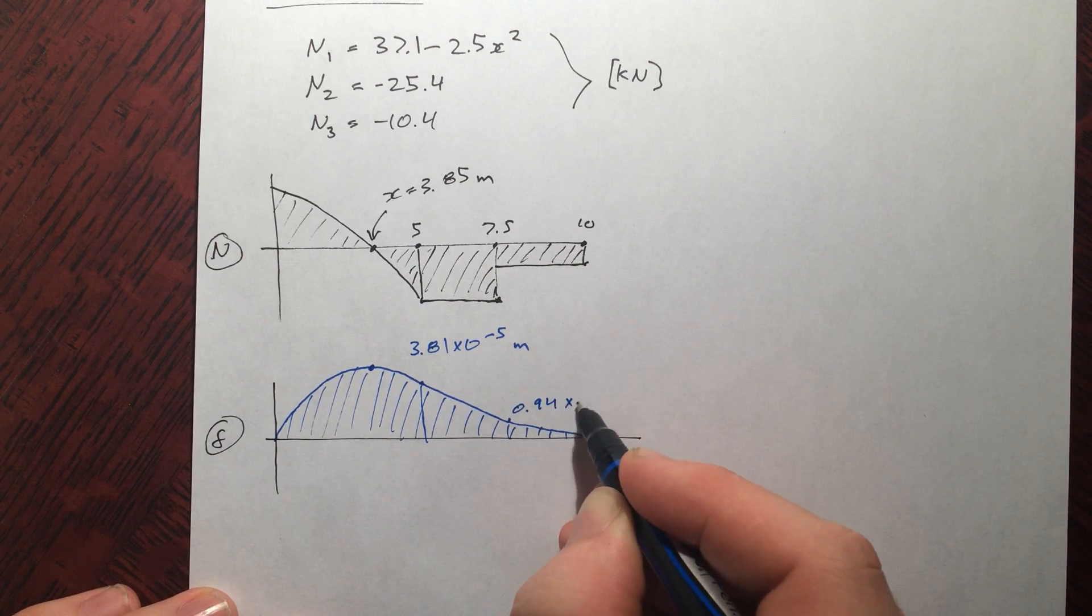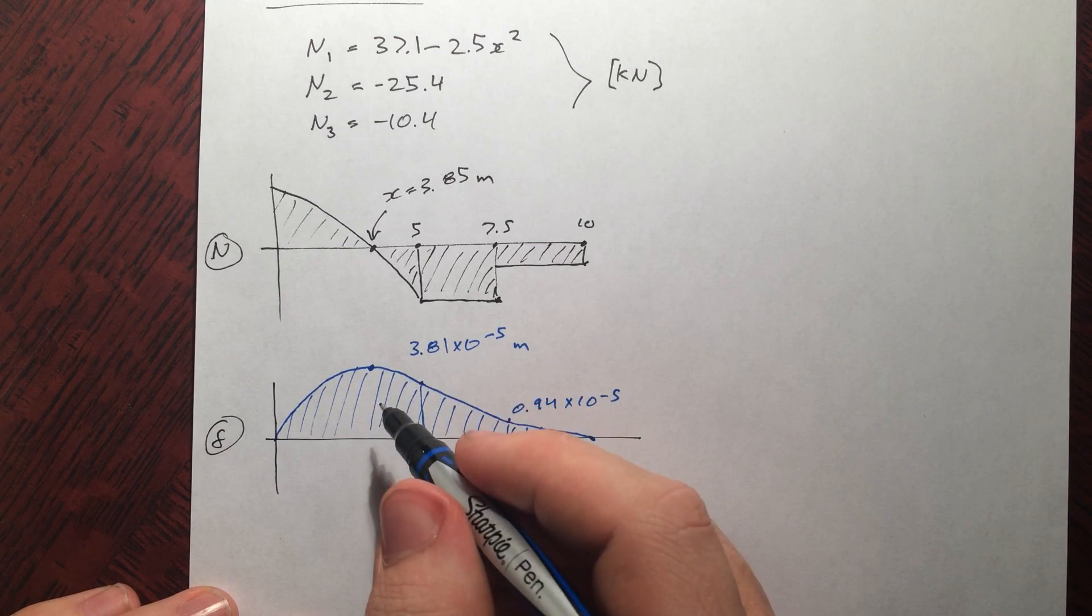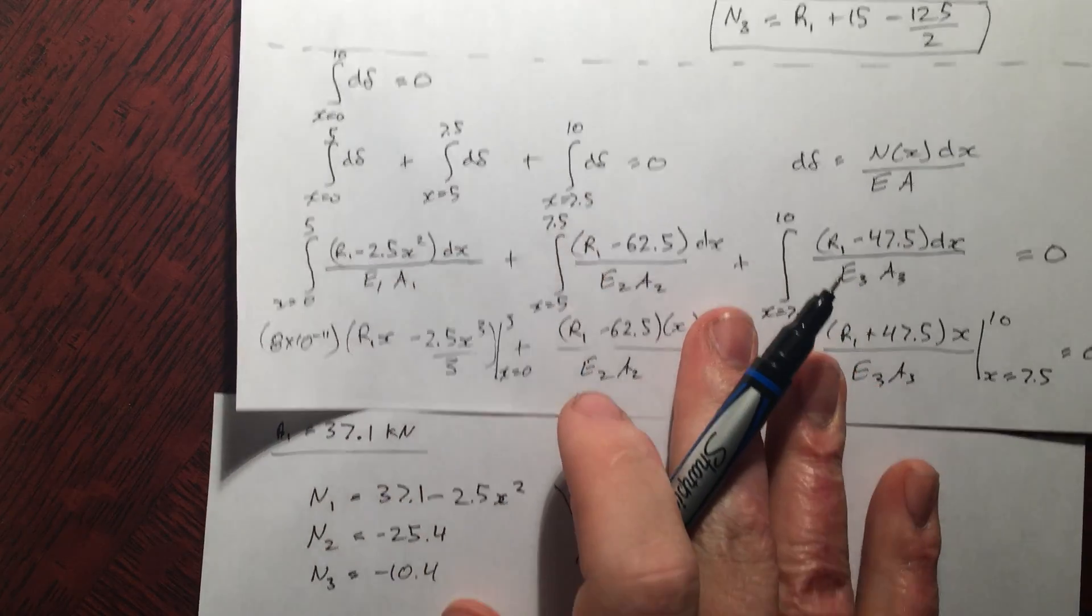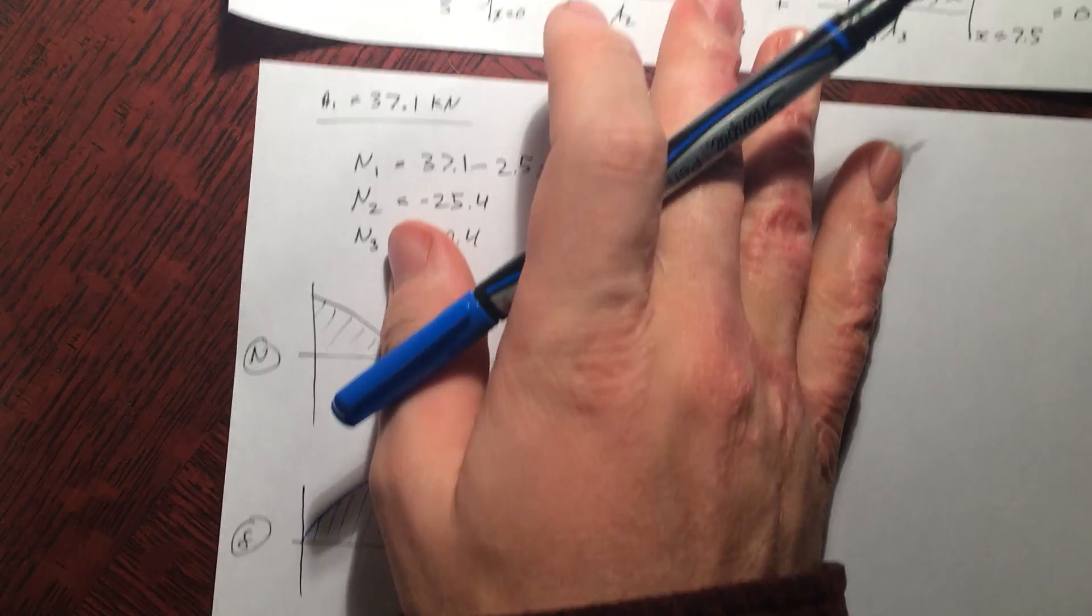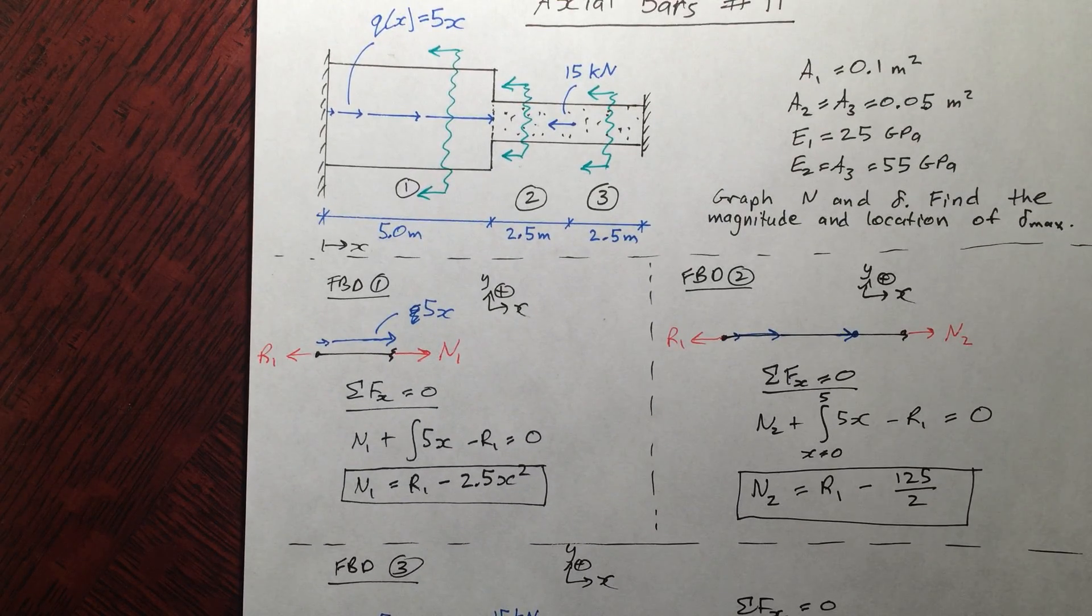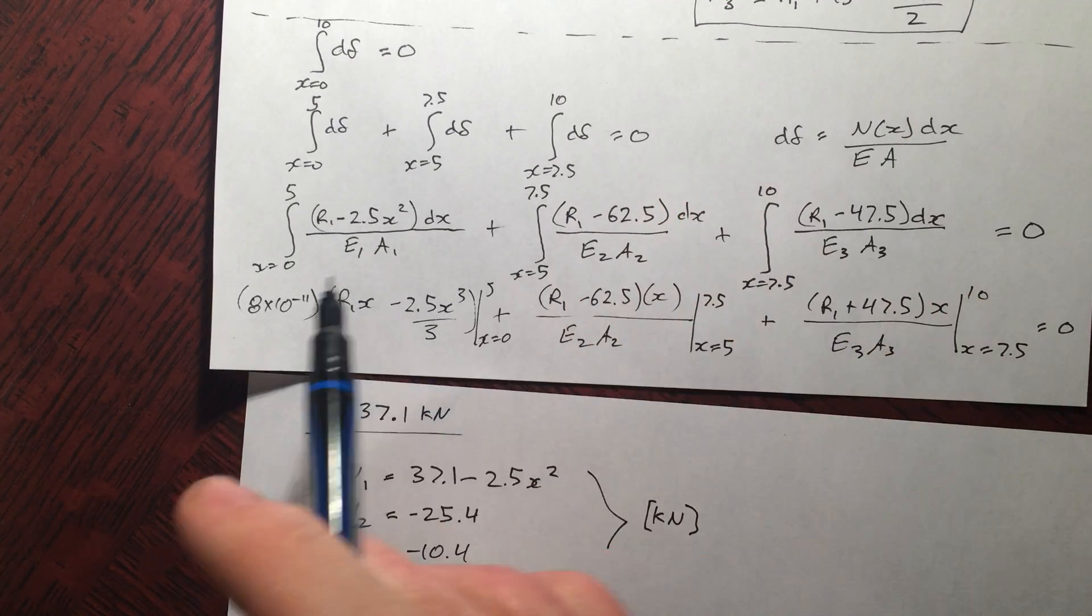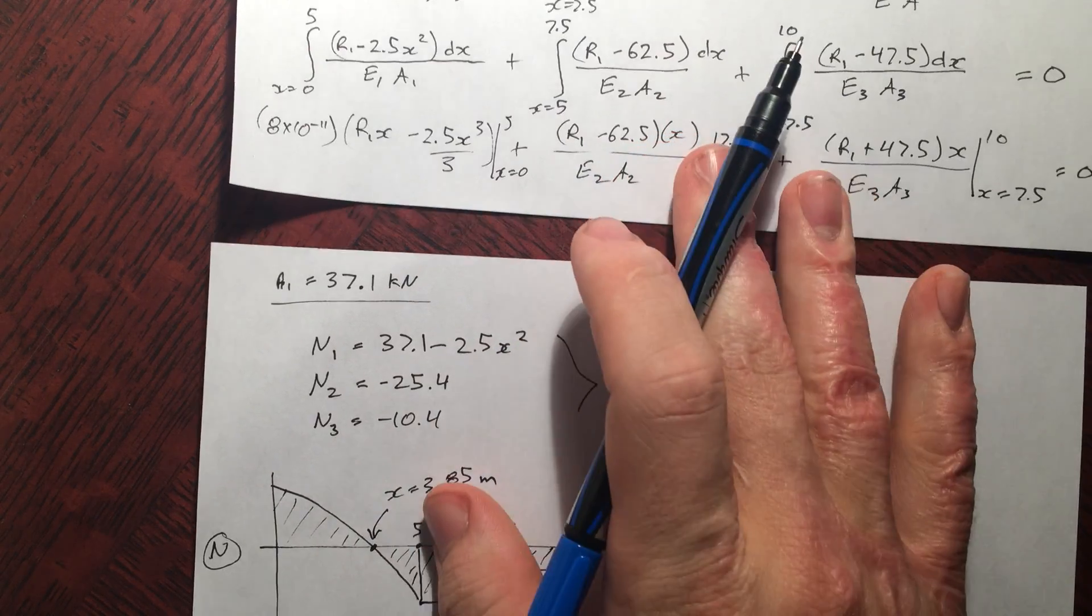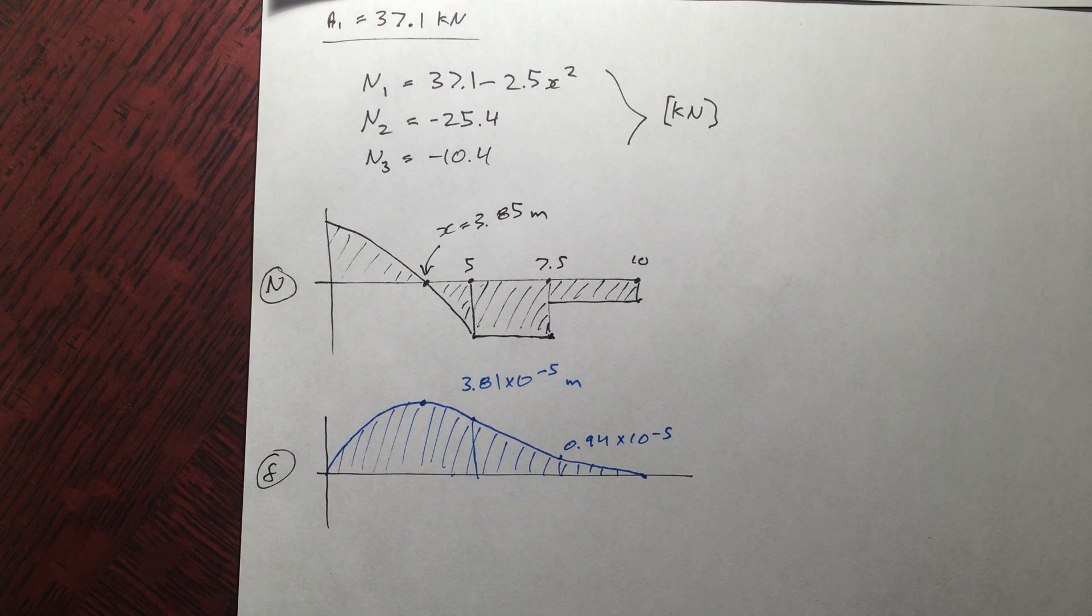0.94 times 10 to the minus 5, and this point here, it's not really so important. You can go through and solve for each of these values along here. It's just good to get a general idea of what's happening. So just to recap, when you have this bar between the walls, find all your internal forces in terms of one reaction, plug it into your displacement equation, solve for that reaction, then go back and find your normal forces and your displacements and plot them. Alright, hope this helped. I'll see you in my next video. Thanks so much.